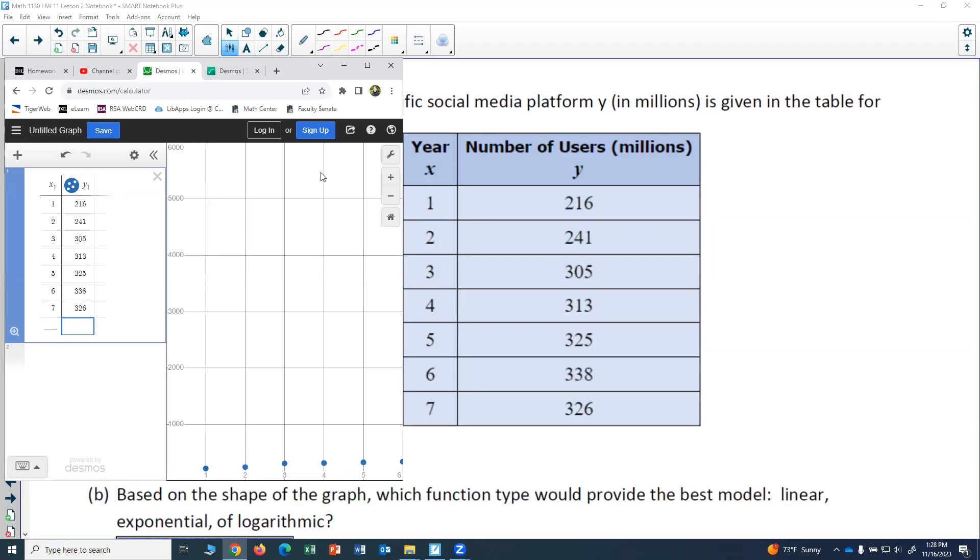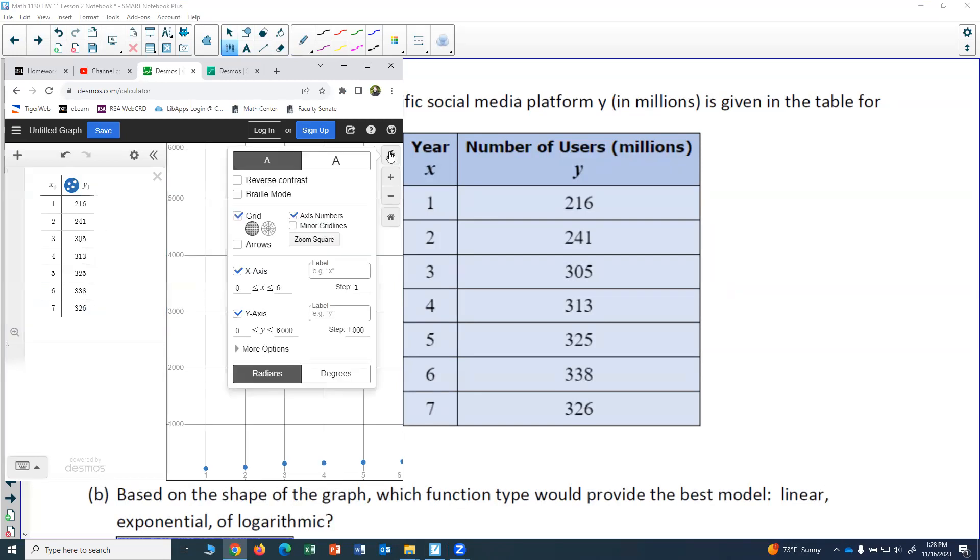Okay, now let's get a good window. Go to the wrench key in the upper right. The x needs to go from a value that is as low as or lower than your least x value in the table. So my least x value in this table is one.